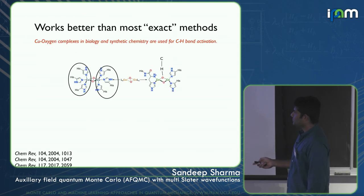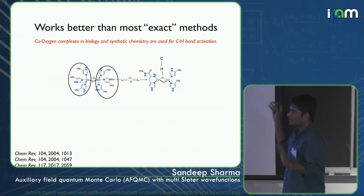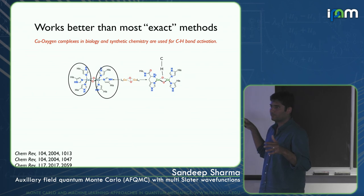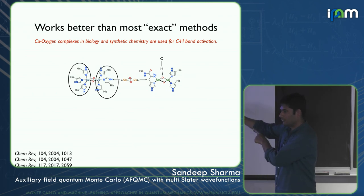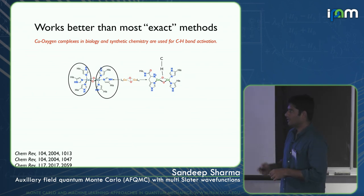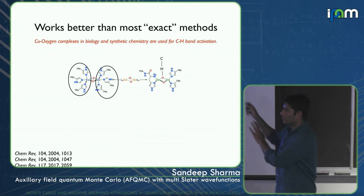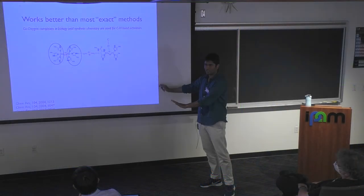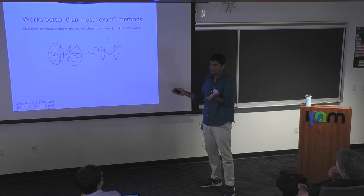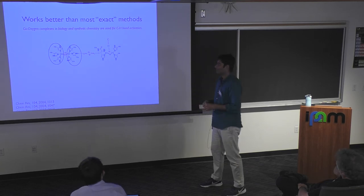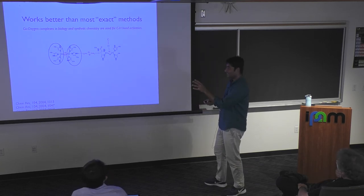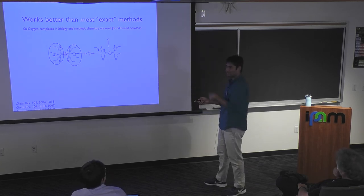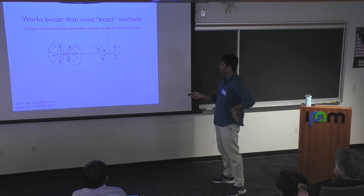Regarding scaling: the overall algorithm is still exponential because selected CI is exponential. But the scaling of HCI itself is actually quite favorable, as I'll show. The naïve multi-Slater AFQMC cost scales as N_D × N⁴ (where N_D is the number of determinants and N⁴ is the single-Slater AFQMC cost).